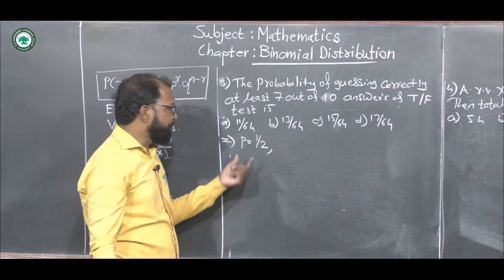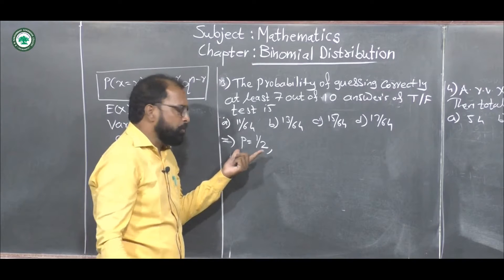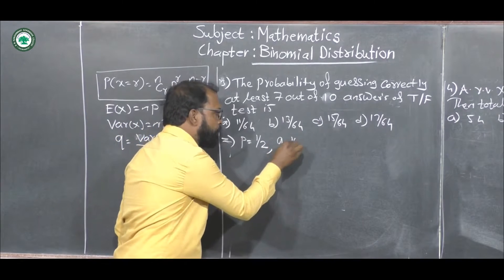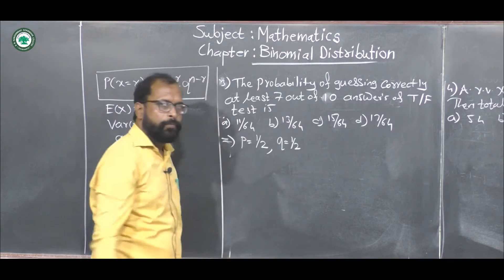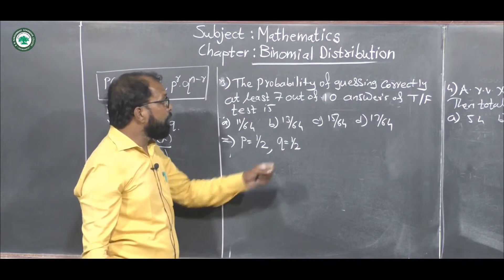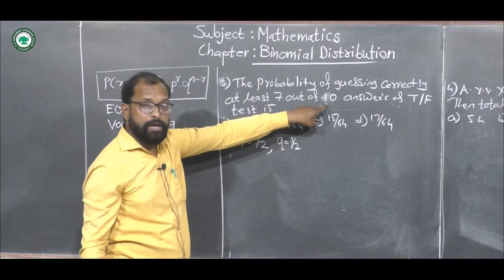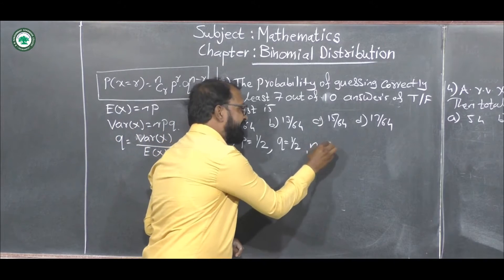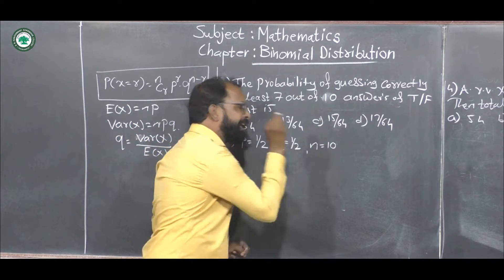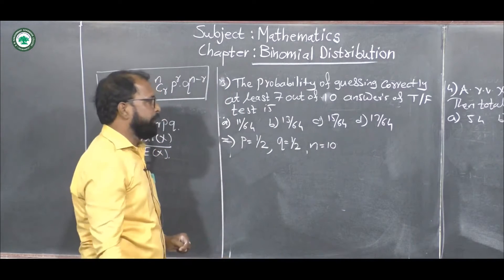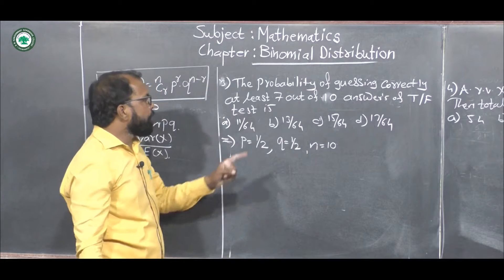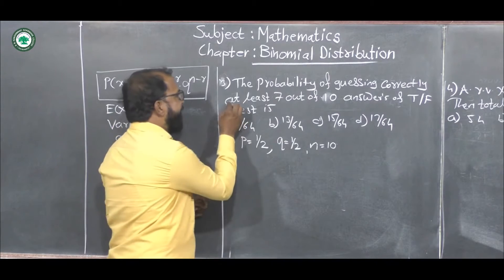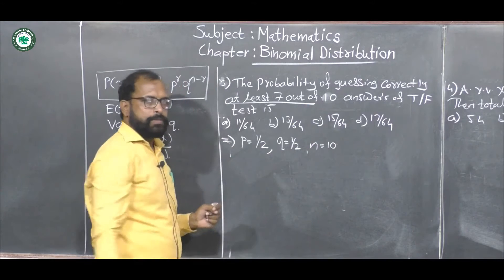Since P becomes 1/2, and we know that P plus Q equals 1, Q also becomes 1/2. The total number of questions is 10, so N is 10. Now we have to find the probability of getting at least 7 correct options.